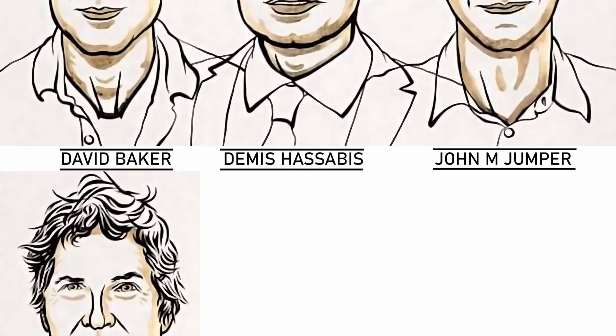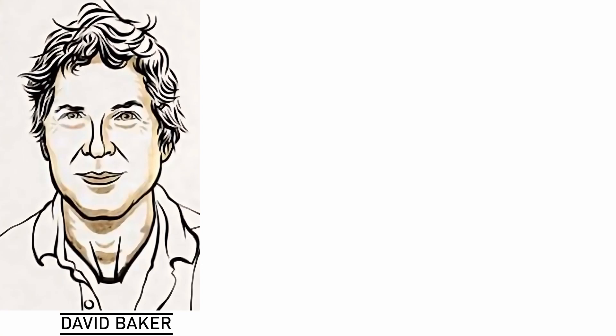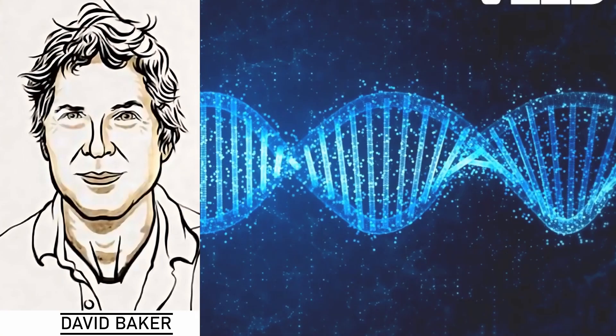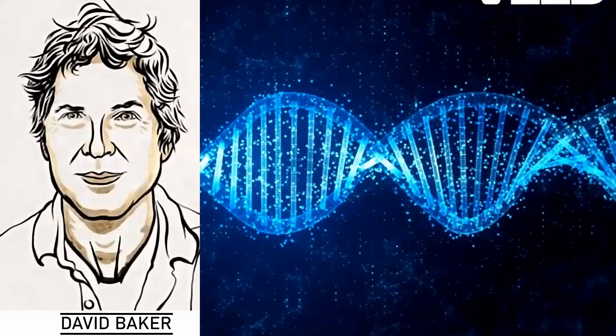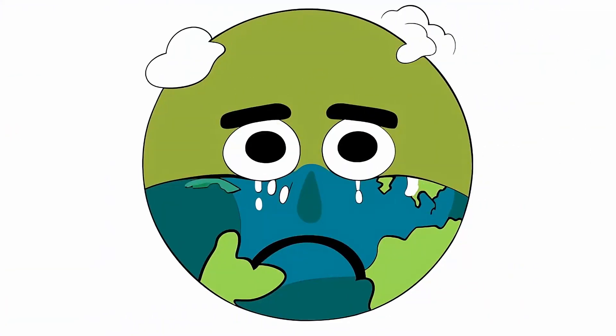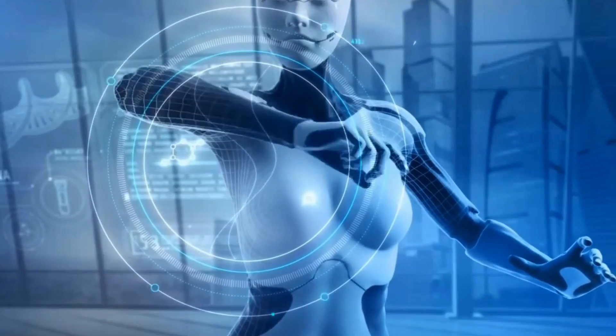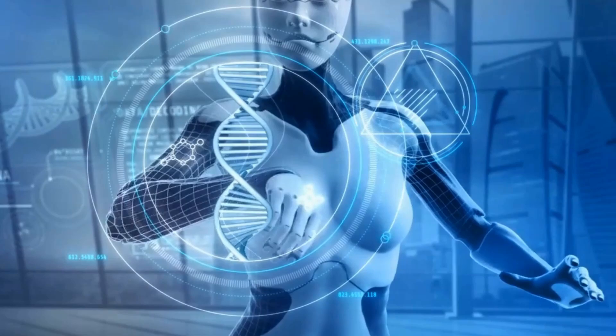First, let's talk about David Baker. He's a scientist who wanted to create proteins, tiny machines inside our bodies, from scratch. Instead of relying on nature, which took billions of years to evolve proteins, Baker's team figured out how to design brand new proteins with computers. Why is this a big deal?